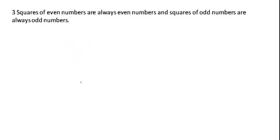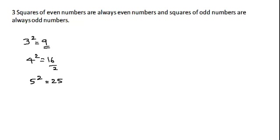The third property is that squares of even numbers are always even, and squares of odd numbers are always odd. For example, 3 squared equals 9, which is odd. 4 squared equals 16, which is even because it is divisible by 2. 5 squared equals 25, which is odd. 6 squared equals 36, which is clearly an even number.